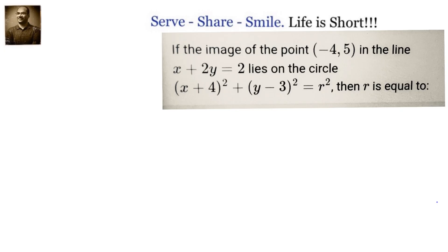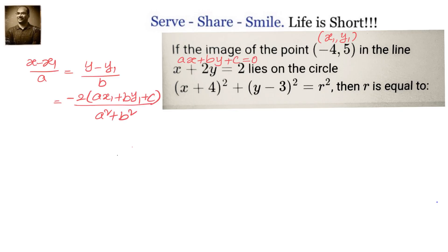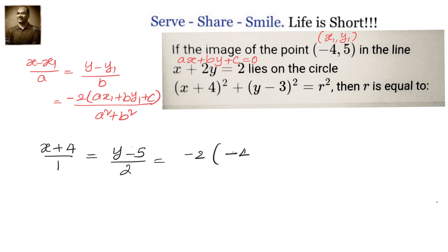You have a straight line and you want to find out the image of a point. You can do that without a formula, but with the formula it will become easy. If we want the image of point x1 comma y1 with respect to the line ax plus by plus c equals to 0, then the formula is x minus x1 by a equals to y minus y1 by b equals to minus 2 into ax1 plus by1 plus c divided by a square plus b square.